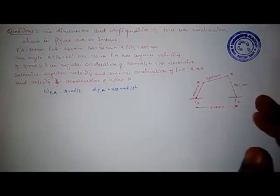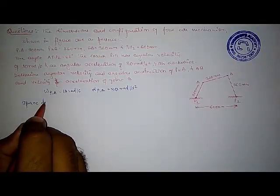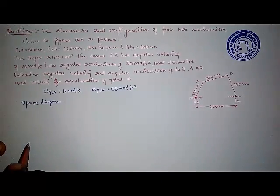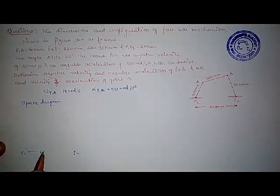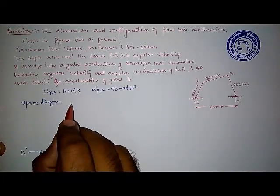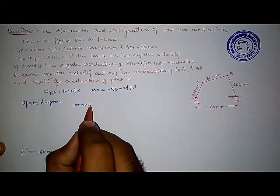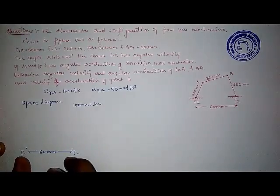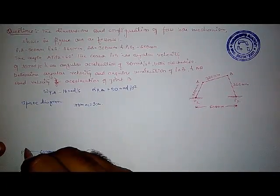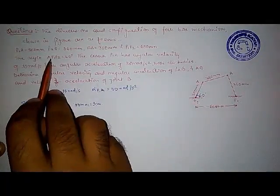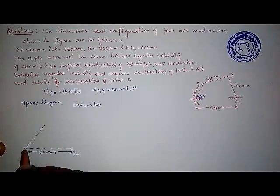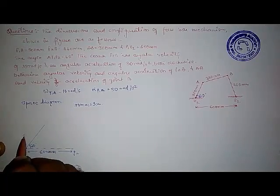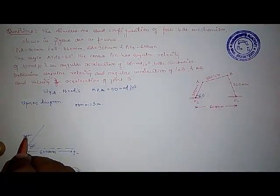We will draw the space diagram, also called the configuration diagram. It is given that there is a point P1 and a point P2, and the distance between them is 600 mm. We need to take a scale — by looking at the figure, we can use the scale of 100 mm equals 1 cm, so the 600 mm distance between P1 and P2 will be 6 cm. Then, since angle A-P1-P2 is given as 60 degrees, from P1 we draw a line at 60 degrees.